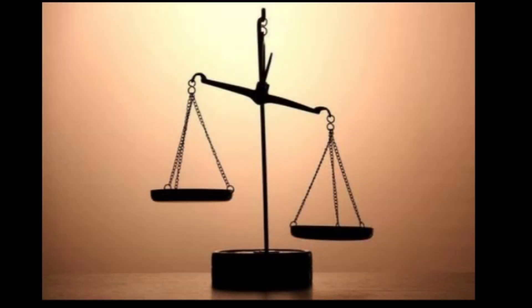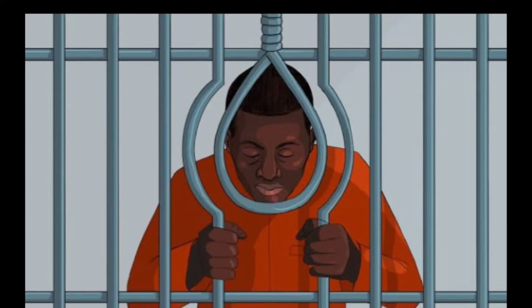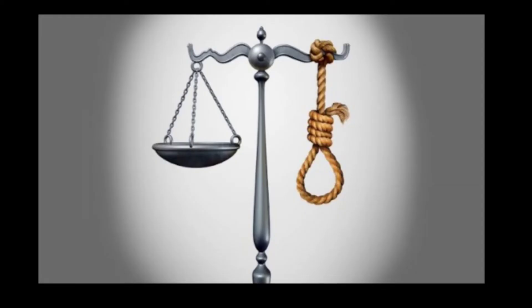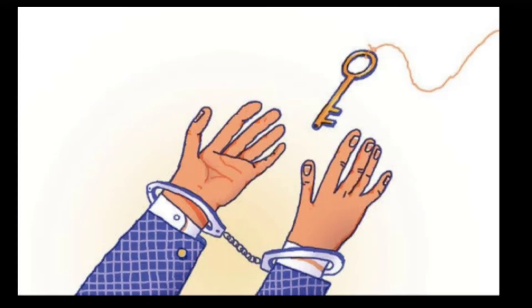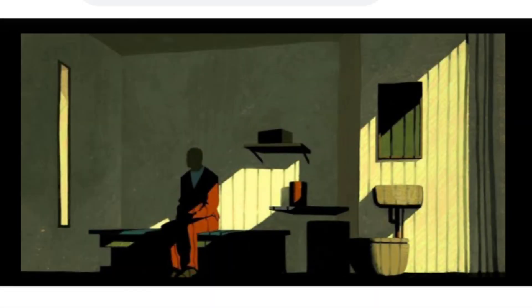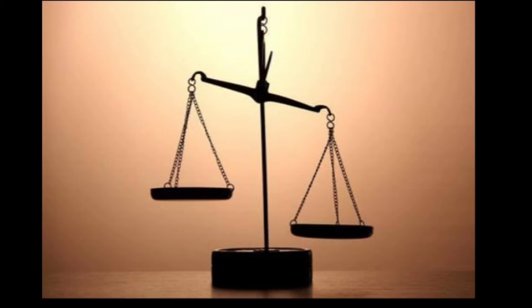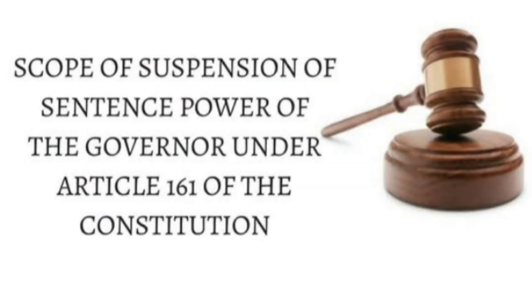Number three — Reprieve: the President can make a delay in the execution of a sentence to allow the convicted person to apply for a presidential pardon. Number four — Respite: the President can change the type of punishment given to the convicted person in view of some special circumstances, like pregnancy or mental condition. Number five — Remission: the President can change the quantum of the punishment without changing its nature; for example, he can reduce 20 years of rigorous imprisonment into 10 years.